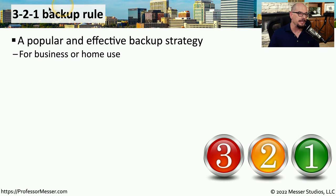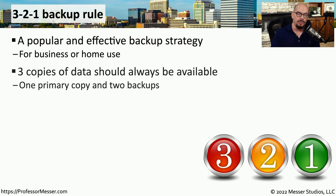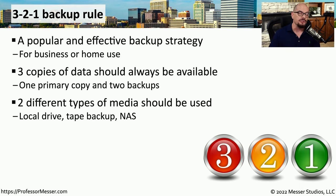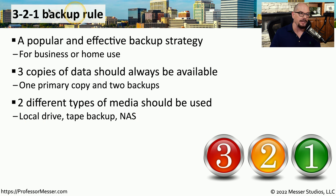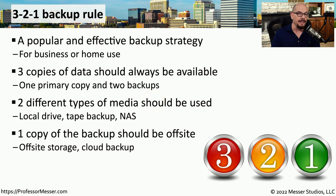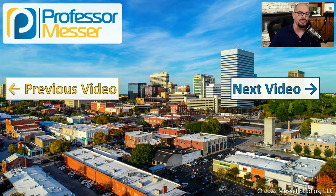Another popular strategy is the 3-2-1 backup. This is something you can use for your business or implement at home. The three in the 3-2-1 strategy means you will have three copies of data always available to you — the primary copy on your system and two other backups. The two refers to the type of media, where you need at least two different types, such as a local drive, a tape backup, or a network attached storage device. The one in 3-2-1 means that one copy of this data should be kept offsite, so if something did happen to your business or home, you would still have a copy of that data stored somewhere safe.